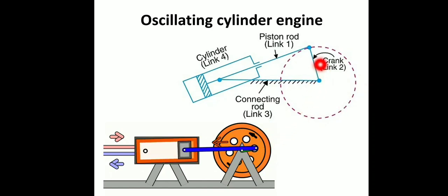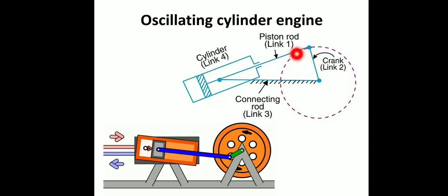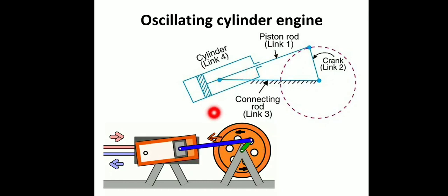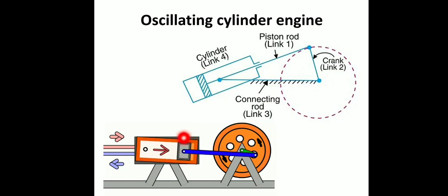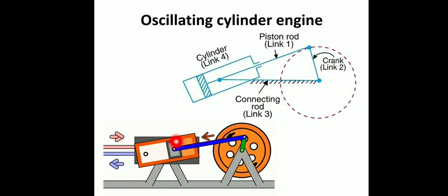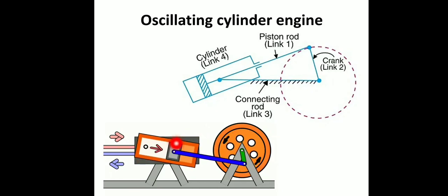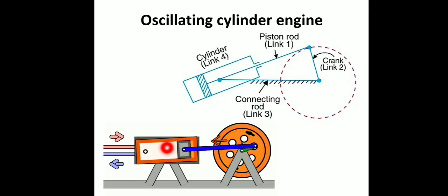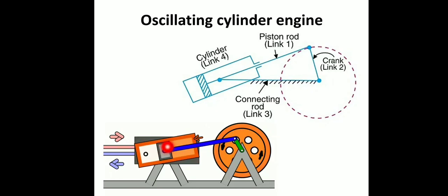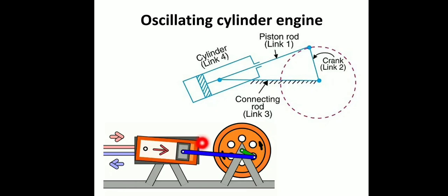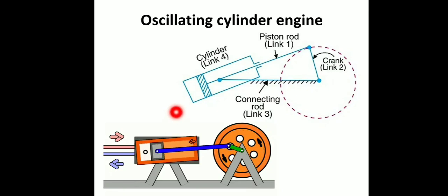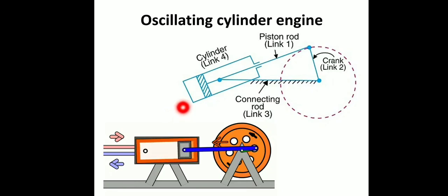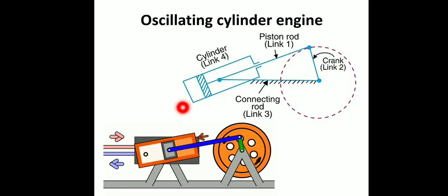In the oscillating cylinder engine: the crank moves, the piston rod moves, and the corresponding cylinder oscillates. Normally the cylinder is fixed, but in this inversion the cylinder oscillates. This is the inversion that produces the oscillating cylinder engine mechanism.